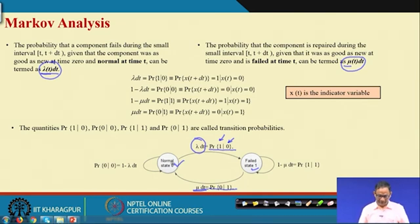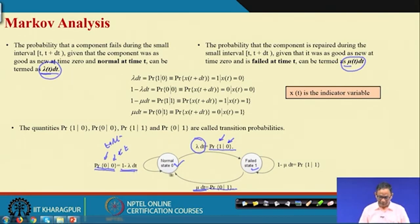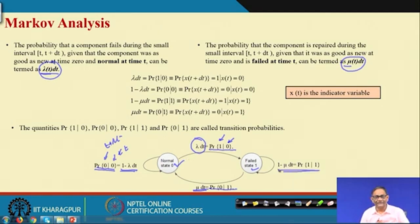The probability that the component is working at time t and will also be working at time t+delta t is probability 0 given 0, meaning normal at t+delta t given normal at t. That probability is 1 minus lambda(t)·dt. When the component is at normal state it can either remain normal or go to the failed state — those are the two conditions. So the transition from normal to failed is lambda·dt, and remaining at normal is 1 minus lambda·dt, since the two probabilities sum to 1.